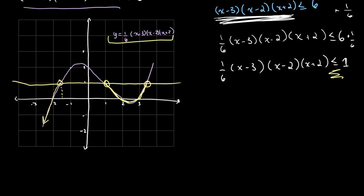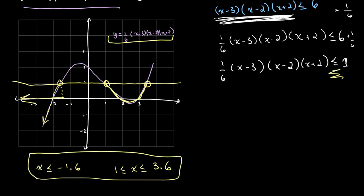This point over here is about x = −1.6, so x ≤ −1.6 represents the leftward part of the graph. Then from about x = 1, if x ≥ 1 and less than or equal to about x = 3.6, the inequality is also satisfied. So the solution is x ≤ −1.6 or 1 ≤ x ≤ 3.6, covering all points beneath the line y = 1.